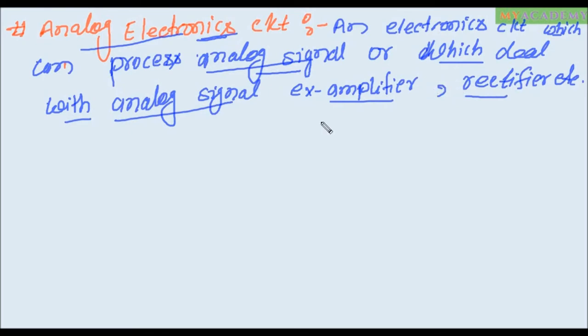We saw that amplifier, rectifier, FET, oscillator, rectifier, transistor, diode all analog electronics circuit are examples.